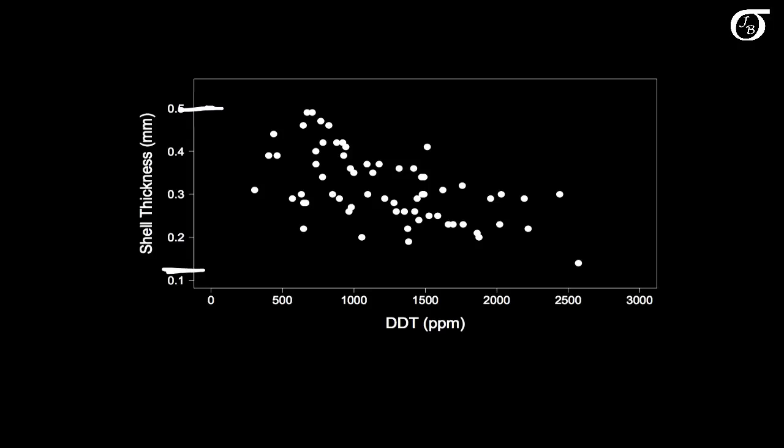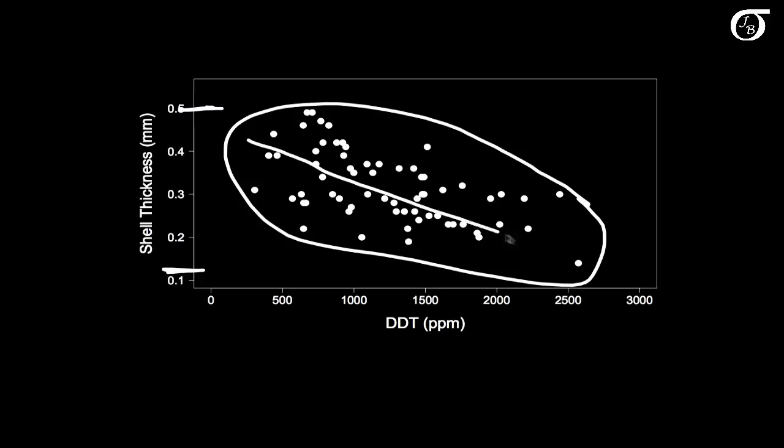That variability is made up of two parts. Part of it is due to this decreasing trend that we see here, the fact that shell thickness tends to decrease as DDT levels increase. And so there is a decreasing trend that we see here. But part of it, part of that variability, is due to simple random variability about that line as well.